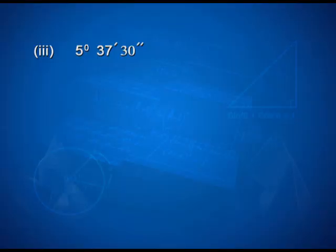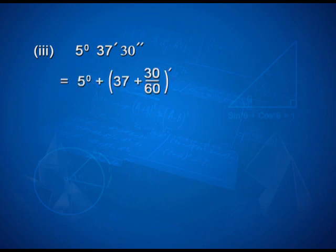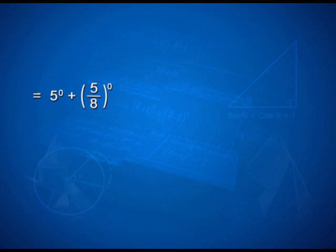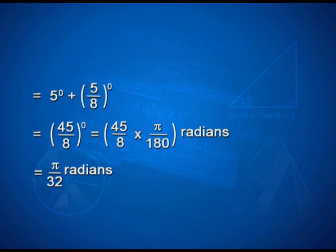Let us take one more example involving degrees, minutes, and seconds. 5 degrees 37 minutes 30 seconds can be solved as 5 + (37 + 30/60)/60 degrees, which simplifies to 5 + 75/2 × 1/60 degrees, giving 5 + 5/8 degrees, or 45/8 degrees. Converting into radians by multiplying by π/180, we get π/32 radians.